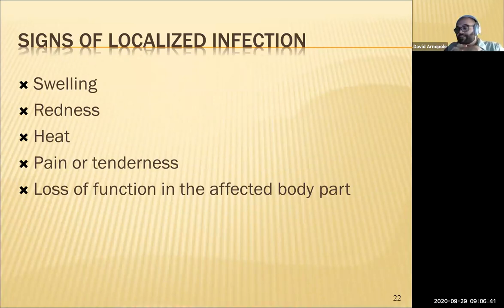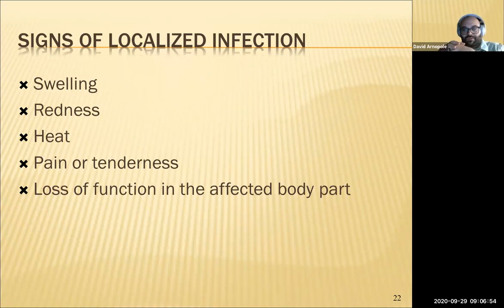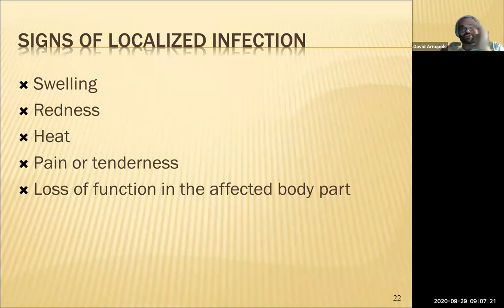Signs of localized infection include swelling, redness, heat, pain, and loss of function — not because they're paralyzed, but because it hurts to move. Inflammation irritates the nerves in the affected area, making it very difficult to use that body part.